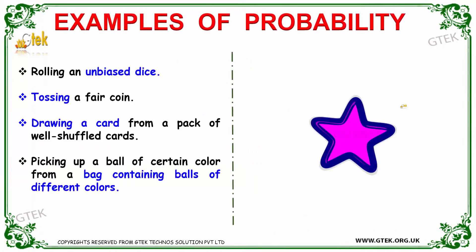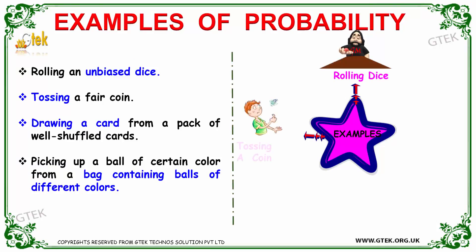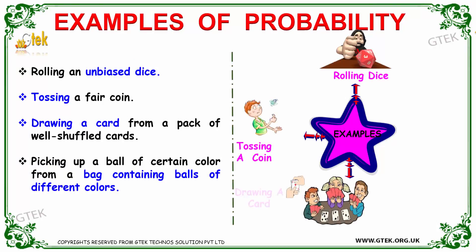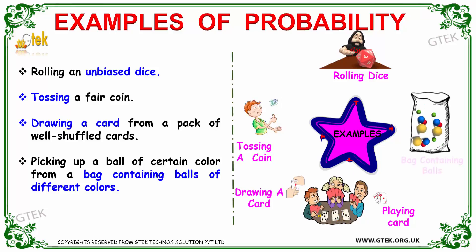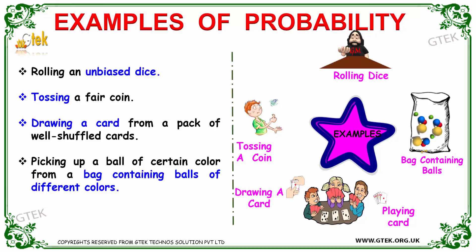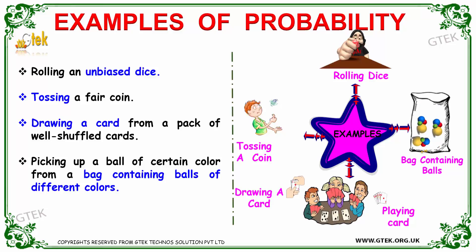Moving further, the typical examples are rolling an unbiased dice, tossing a coin, drawing a card from your playing cards, or picking up a ball from a bag which may contain different colors.